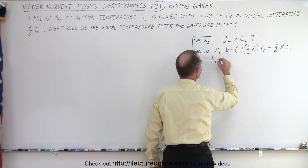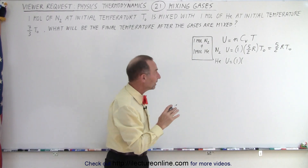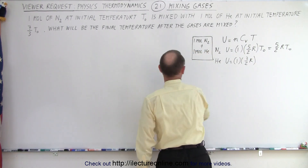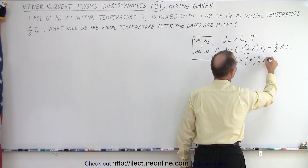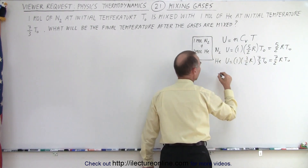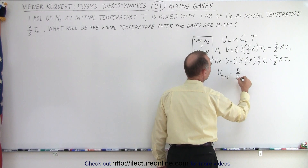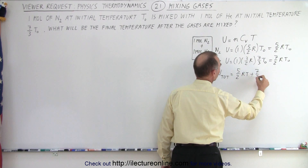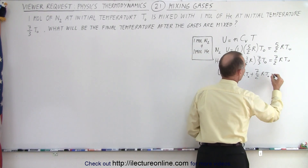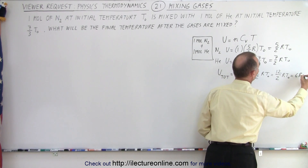Now how much does the helium bring in? The internal energy is equal to 1 mole. Since helium is a monatomic molecule, Cᵥ is 3/2 R, but the initial temperature is 7/3 T₀. The 3's cancel, leaving us with 7/2 R T₀. So the total internal energy of the two gases together is 5/2 RT₀ plus 7/2 RT₀, which is 12/2 RT₀, or 6 RT₀.